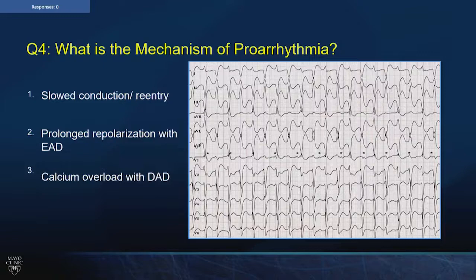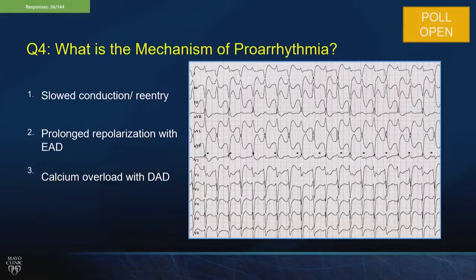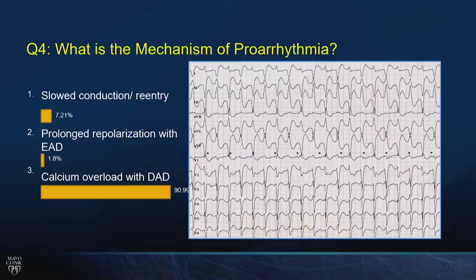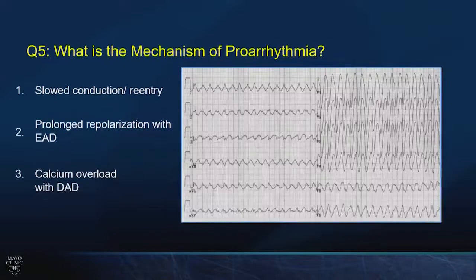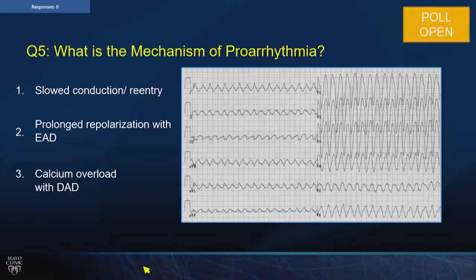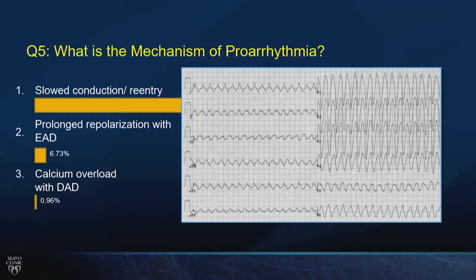How about this ECG — slowed conduction and reentry, EADs, or DADs? This is bidirectional ventricular tachycardia caused by a high calcium state and delayed after depolarizations. And the last ECG — this is monomorphic ventricular tachycardia related to proarrhythmia, as we saw in CAST, from a class 1 agent like flecainide or propafenone — that's slowed conduction and reentry.